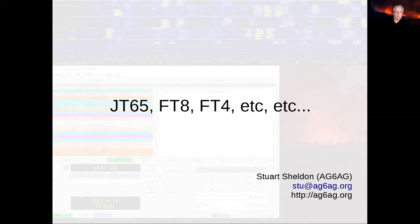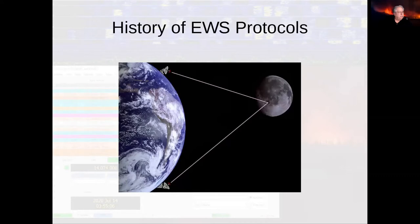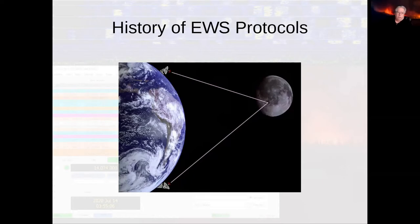Let's talk a little bit about what JT65, FT8, FT4, and all that is about. Basically, we're looking at the history of extremely weak signal protocols. These protocols were designed to do moon bounce and play around with meteor showers. The concept was that people used to do moon bounce using CW, then somebody got the bright idea to digitize it with error correction. With early moon bounces, it was a timed protocol — transmitting on the even minute, somebody else on the odd minute.